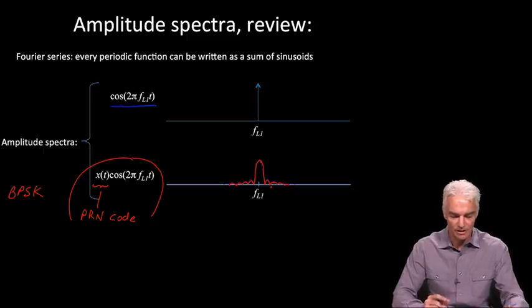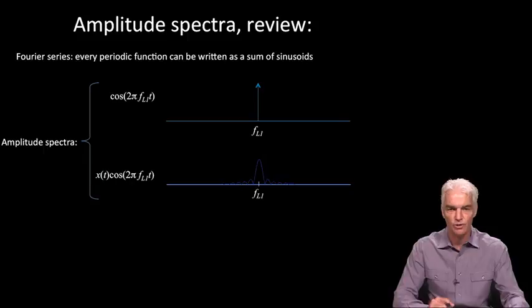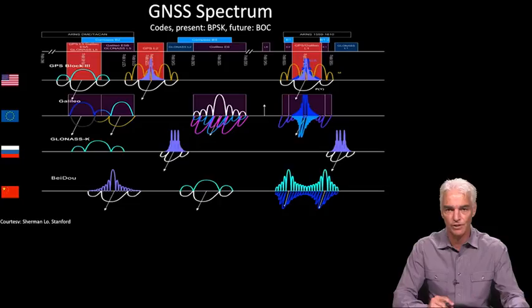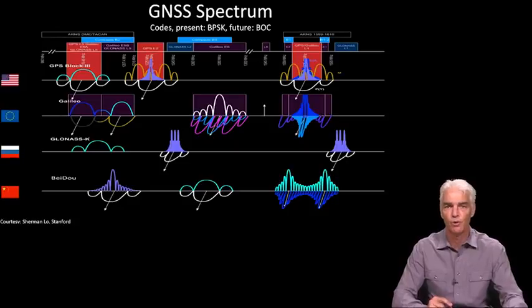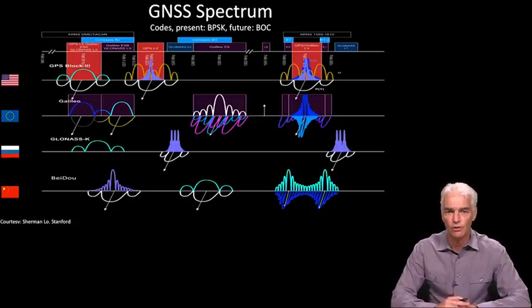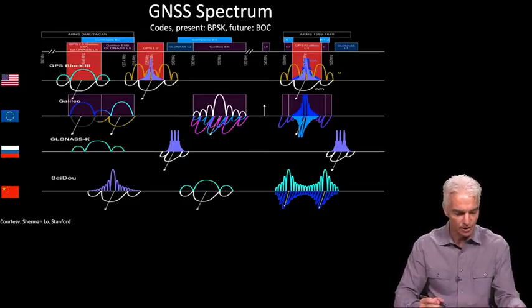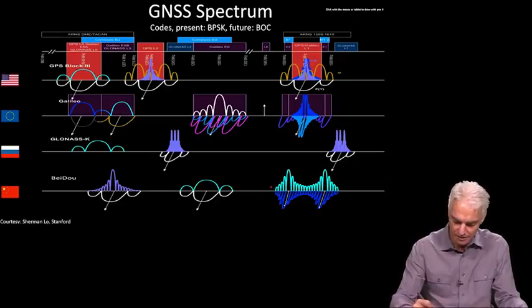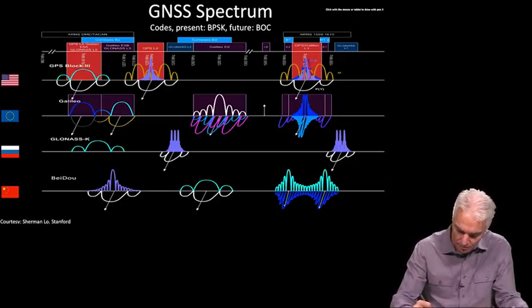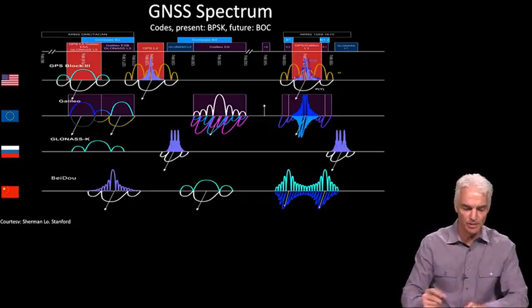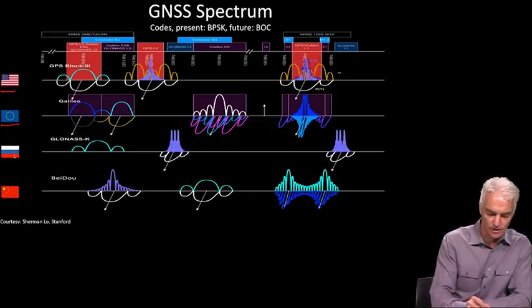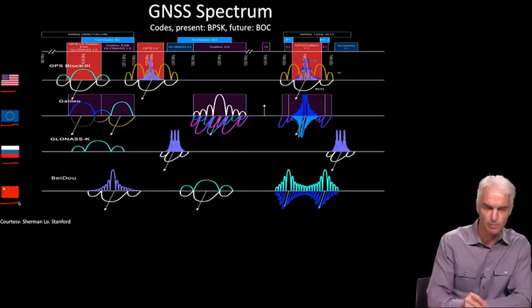By understanding that basic thing, it helps you understand something that looks quite complicated on the face of it, such as this. There's all the spectra for all of GNSS. It looks like a big old mess, but we're going to dig into it one at a time. You'll see things like that CA code showing up. There it is. We'll look at these one line at a time as we go through the different systems. There's GPS, Galileo, GLONASS, Beidou.